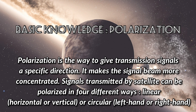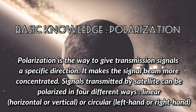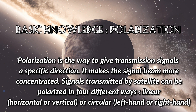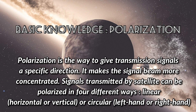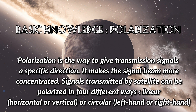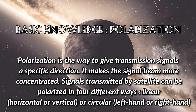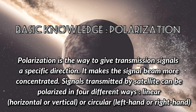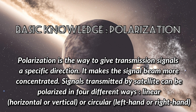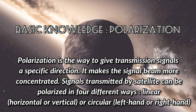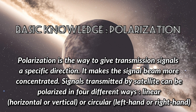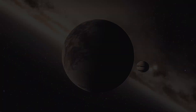Basic knowledge — Polarization: Polarization is the way to give transmission signals a specific direction, making the signal more concentrated. Signals transmitted by a satellite can be polarized in four different ways: linear horizontal, linear vertical, circular left-hand, or circular right-hand polarization.